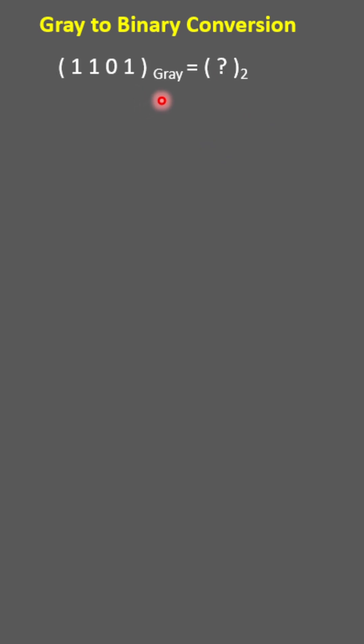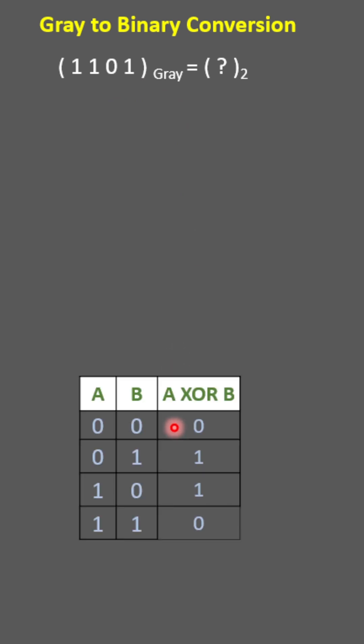How to convert a given gray code into binary? Let's learn it by solving one example. Here 1101 is in gray code form, and we have to convert it into binary code. For gray to binary conversion, the XOR operation is required. This shows the truth table of XOR.